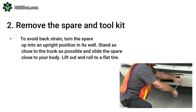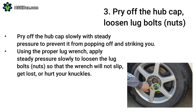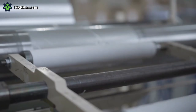3. Pry off the hubcap and loosen lug bolts and nuts: pry off the hubcap slowly with steady pressure to prevent it from popping off and striking you. 4. Using the proper lug wrench, apply steady pressure slowly to loosen the lug bolts and nuts so that the wrench will not slip or hurt your knuckles. And so on — all tasks must be included in your document to share within your organization, based on the information from the JSA that was previously carried out. We hope this video helps you improve your knowledge about job safety analysis and your next assessment in your workplace.